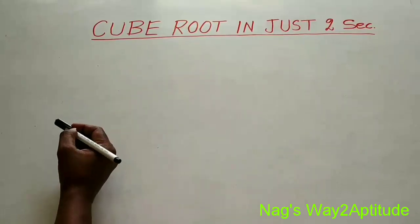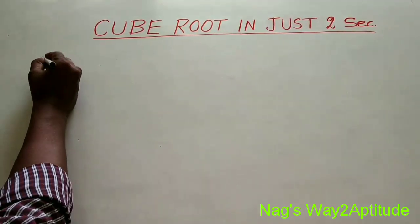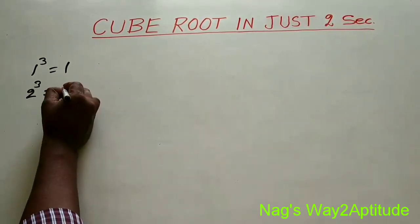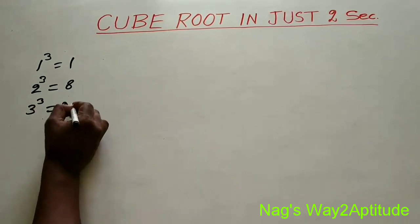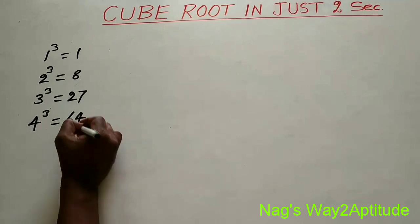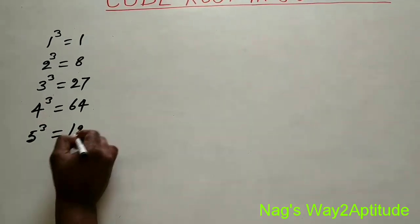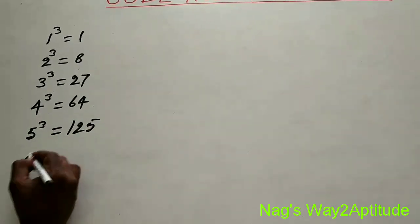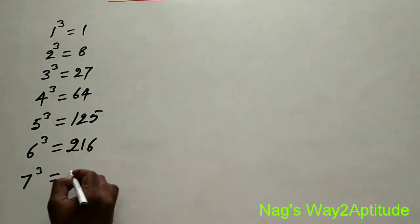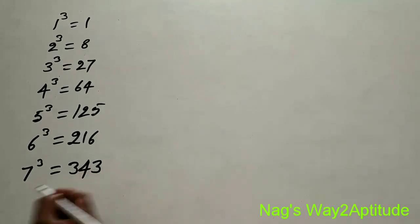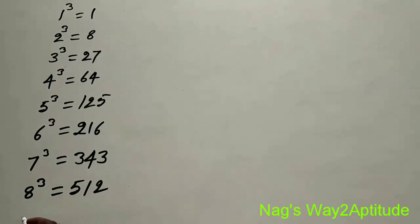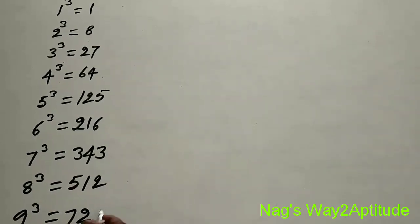But before learning the trick we should know: 1 cubed is 1, 2 cubed is 8, 3 cubed is 27, 4 cubed is 64, 5 cubed is 125, 6 cubed is 216, 7 cubed is 343, 8 cubed is 512, 9 cubed is 729.